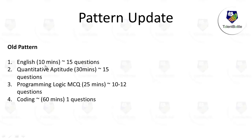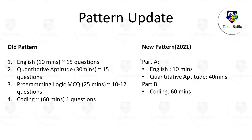The old pattern was: English 10 minutes with 15 questions, Quantitative Aptitude 30 minutes with 15 questions, Programming Logic 25 minutes with 10–12 questions, and Coding 60 minutes with one question. The new pattern is divided into Part A and Part B. Programming Logic MCQ has been eliminated — they have focused only on English, Quantitative Aptitude, and Coding. English is 10 minutes with around 10–15 questions.